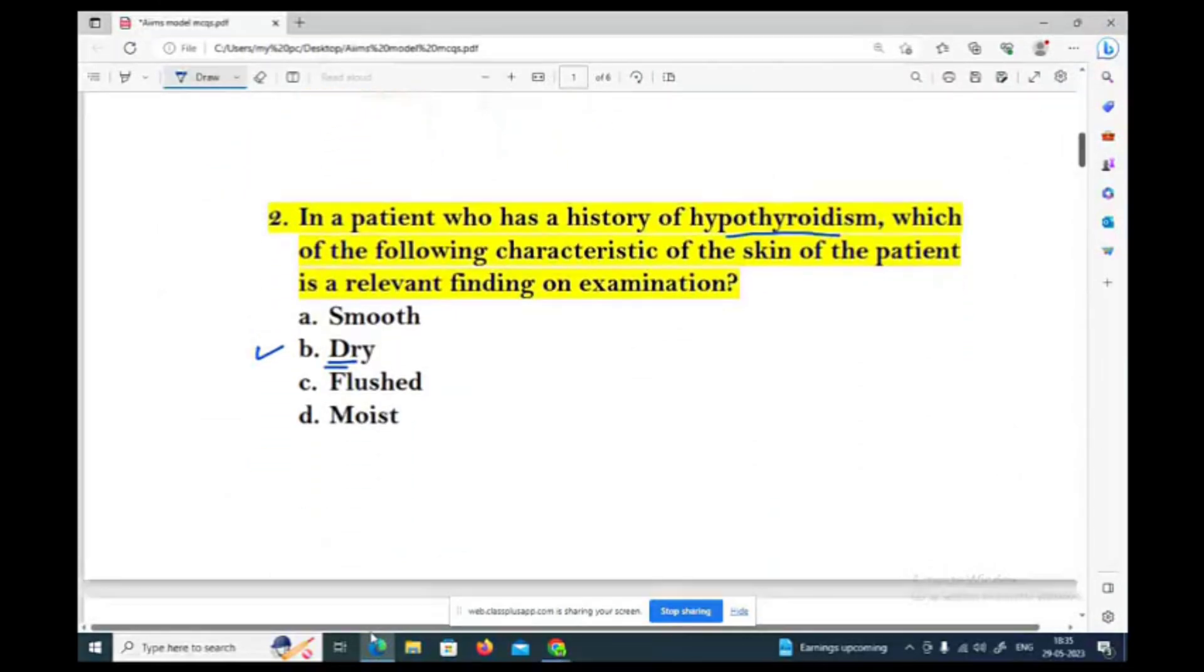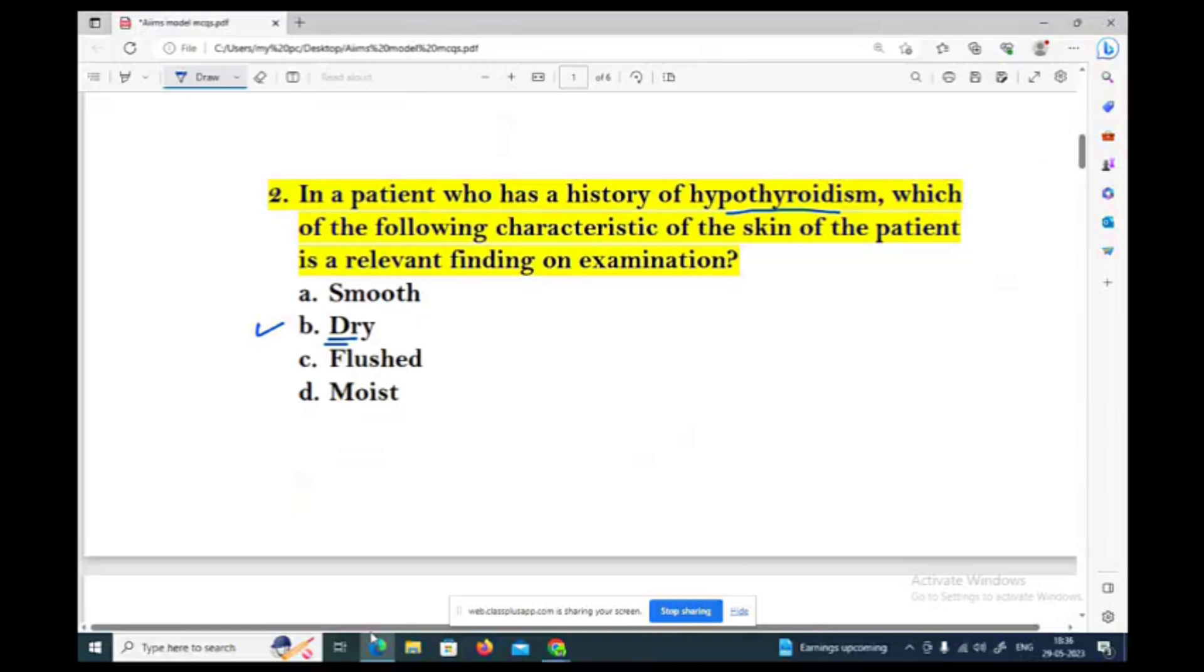The correct answer is option B, dry. If you have any questions about hypothyroidism or hyperthyroidism, you will always get confused. Hyperthyroidism gives smooth skin. Hyperthyroidism is called Graves' disease. Hypothyroidism gives dry skin. Hypothyroidism is called myxedema.